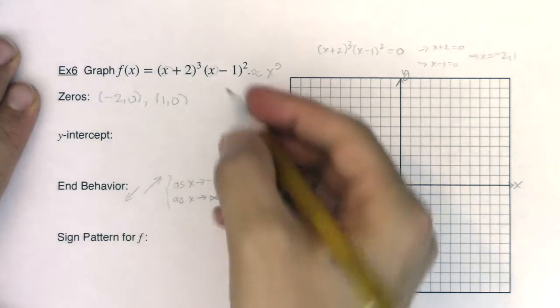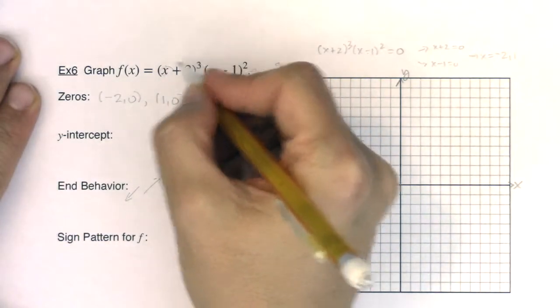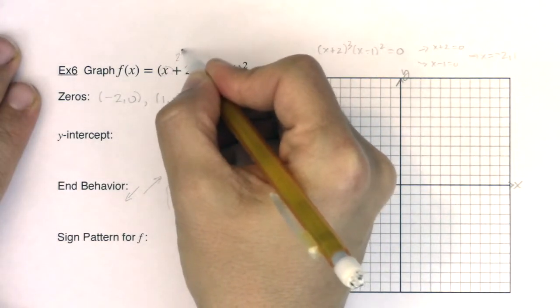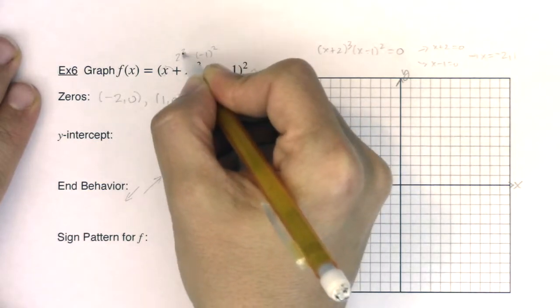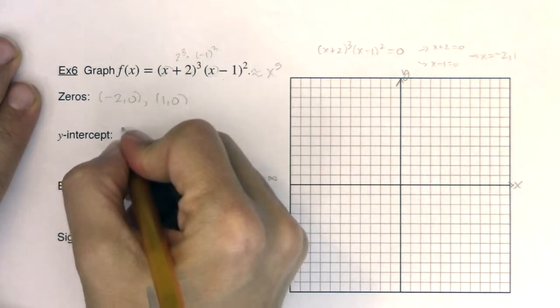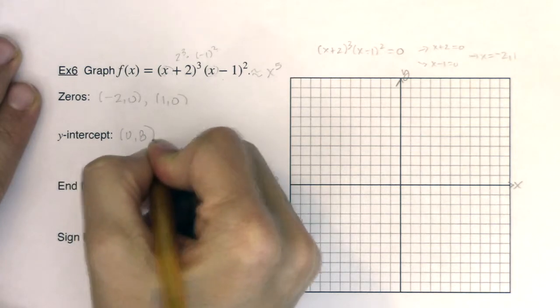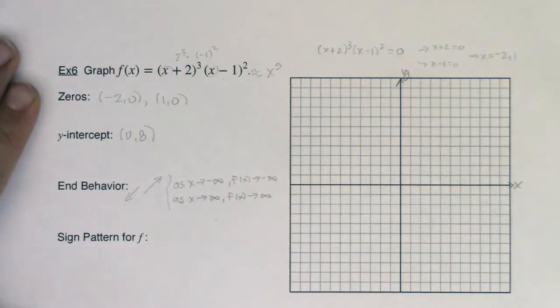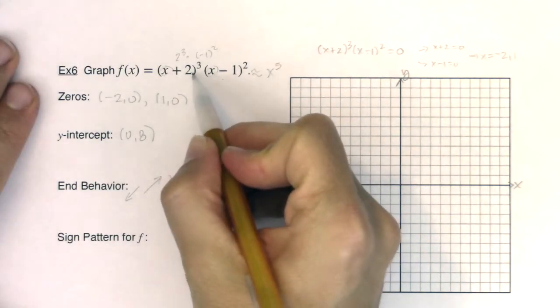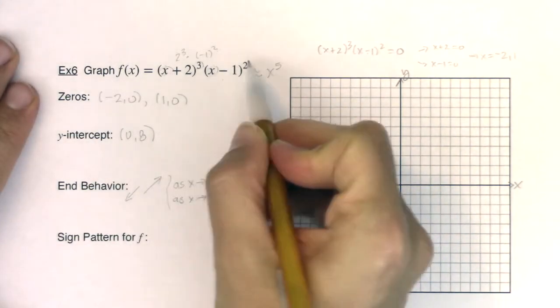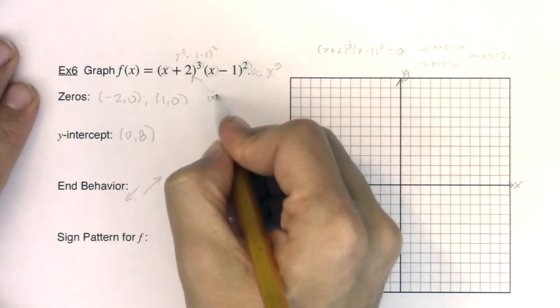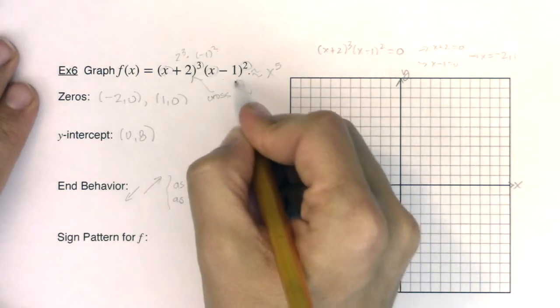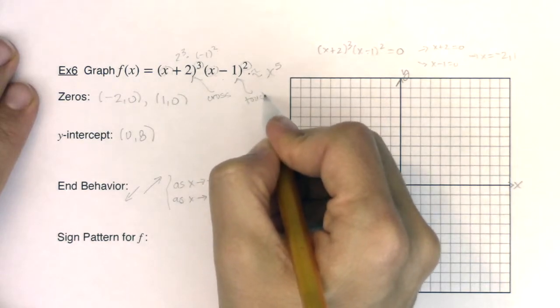For the y-intercept, let's see what would happen. If I let x be zero, this would be 2 cubed, and this would be negative 1 squared. So 2 cubed is 8 times positive 1 leaves me at 8. So I'm looking at (0, 8). So those are all great things to keep in mind. The other thing I want to take note of is I have an odd multiplicity here and an even multiplicity here. So I know I'm going to cross the x-axis at this x-intercept, but I'm going to touch the x-axis here.